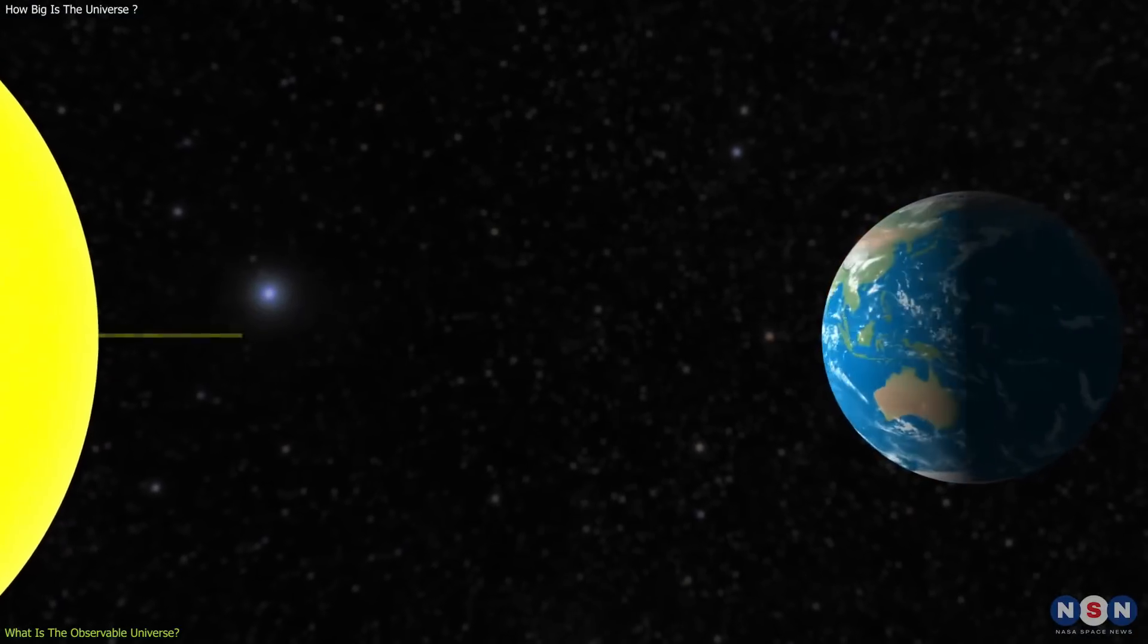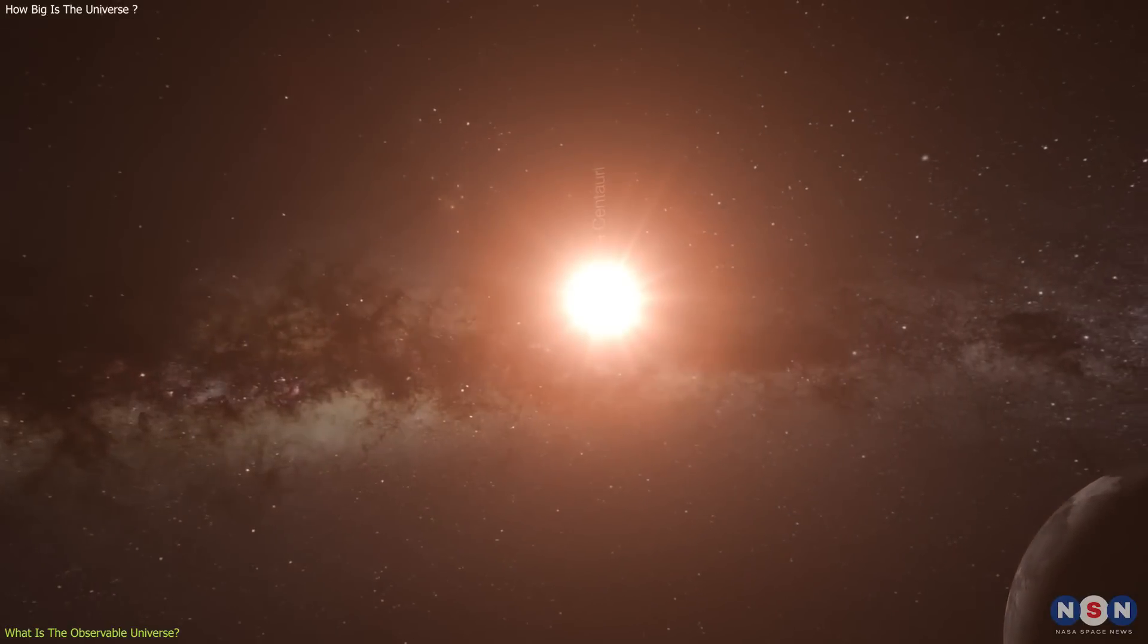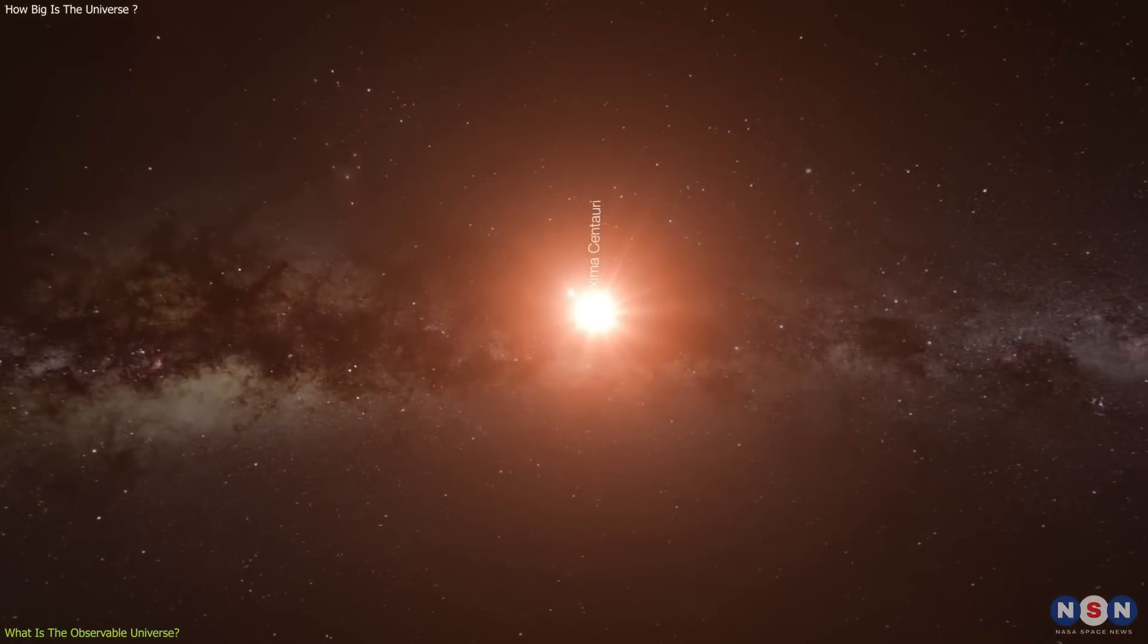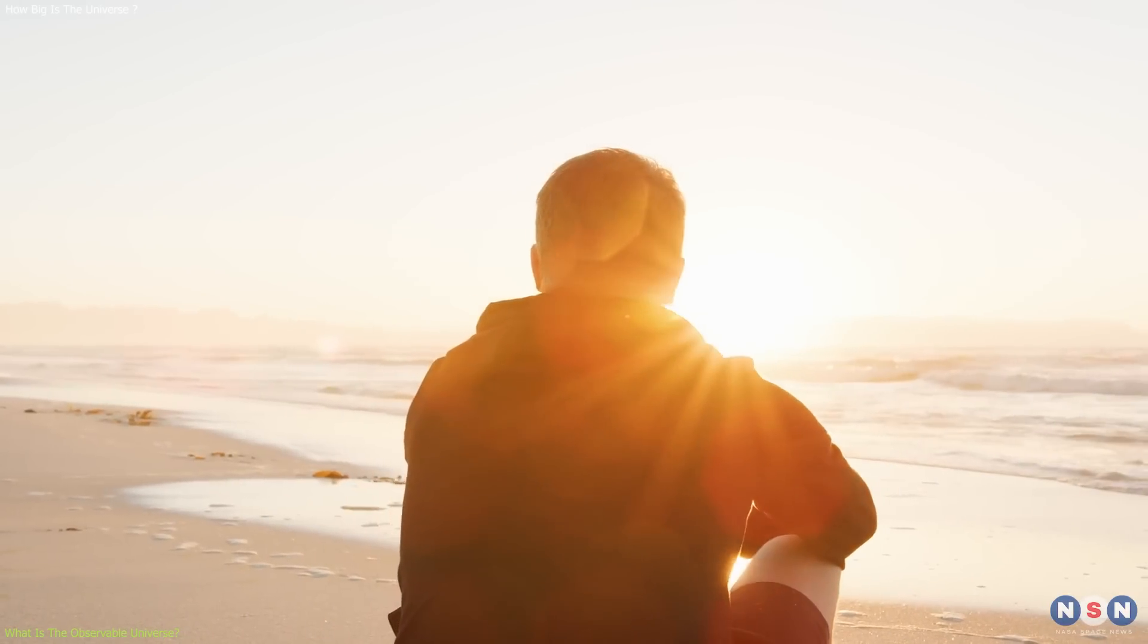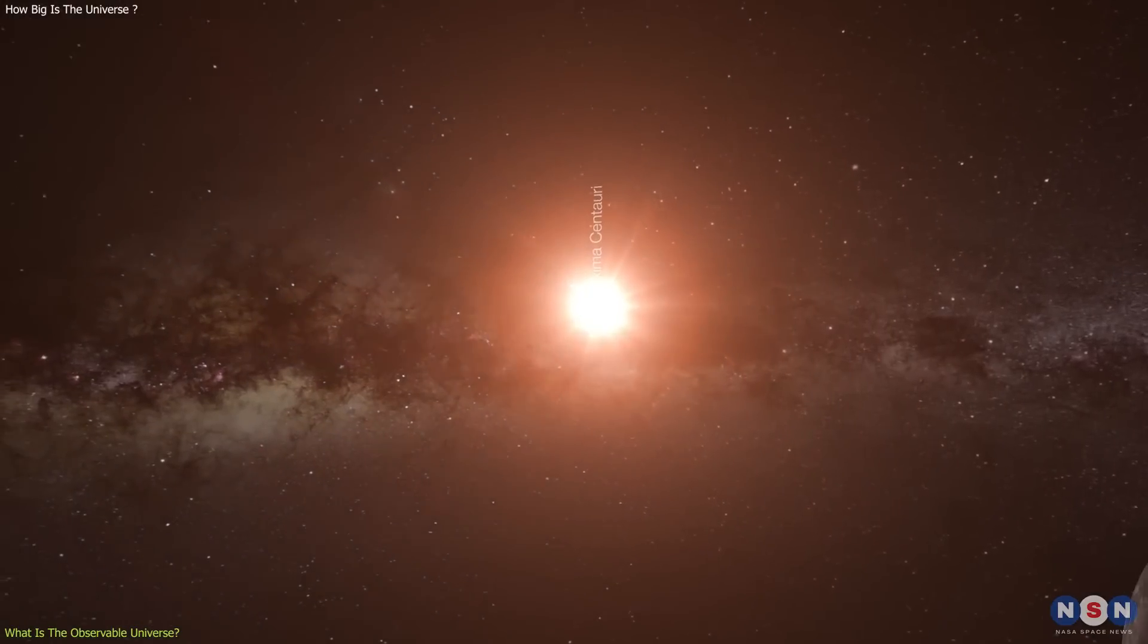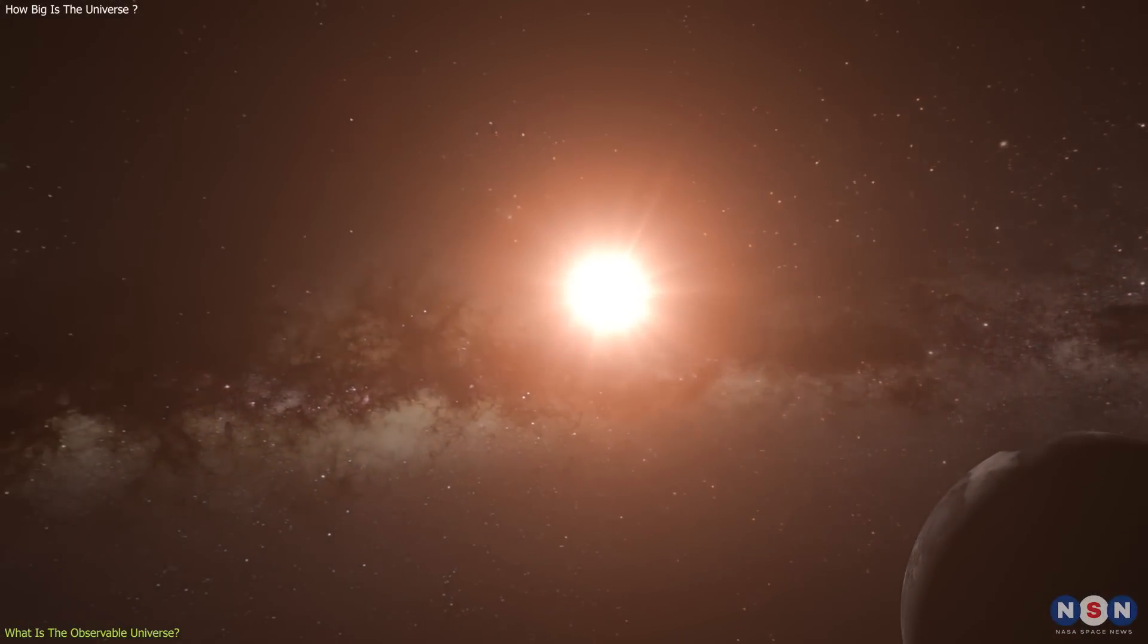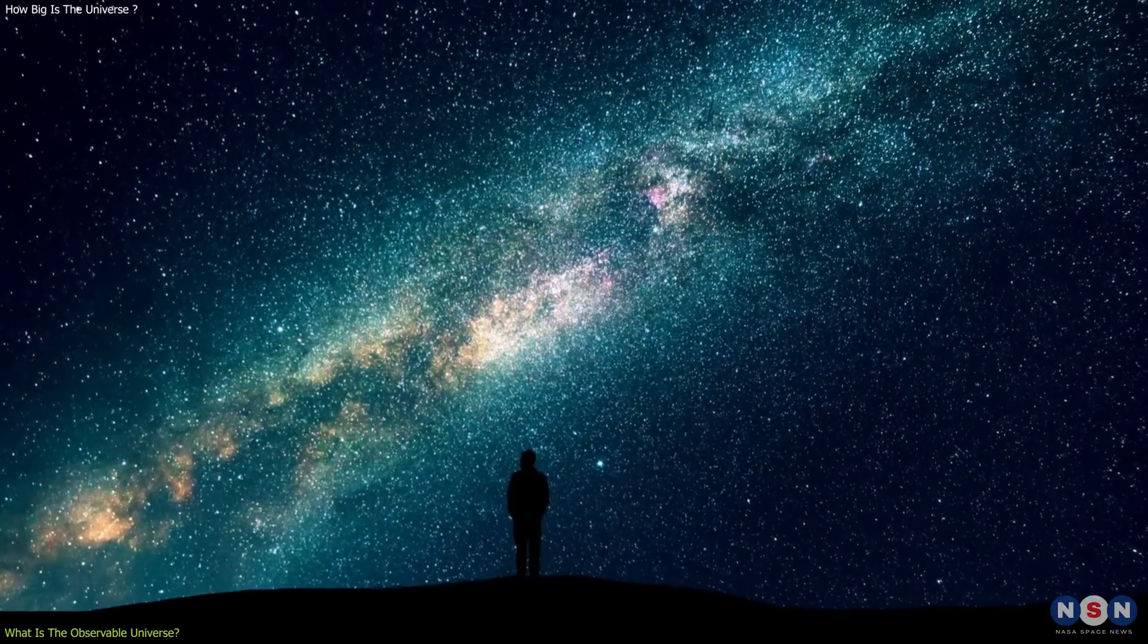For example, it takes about eight minutes for the light from the sun to reach us, and about four years for the light from the nearest star, Proxima Centauri, to reach us. So, when we look at the sun, we see it as it was eight minutes ago. And when we look at Proxima Centauri, we see it as it was four years ago. We are always looking at the past when we look at the sky.